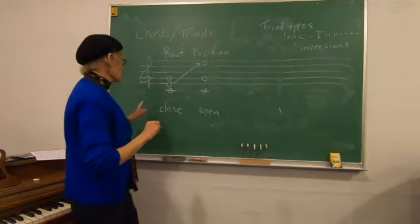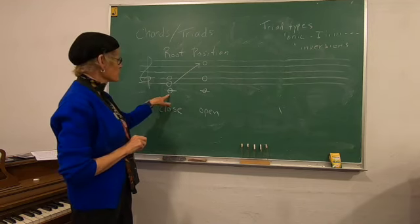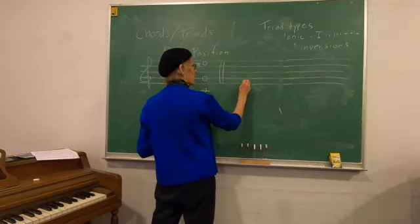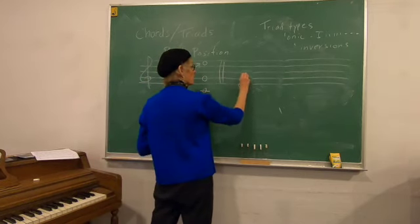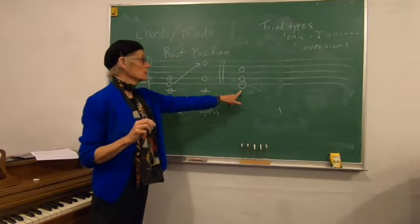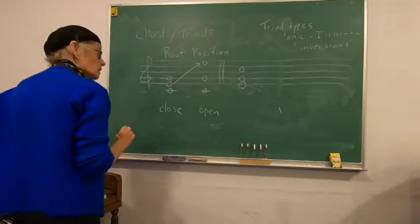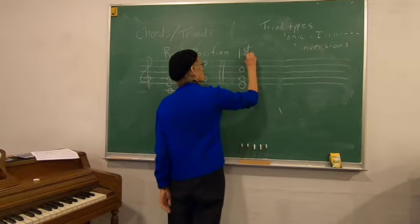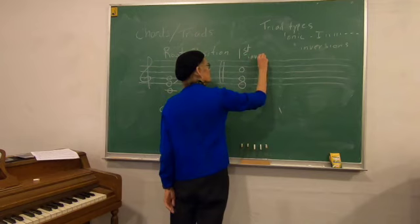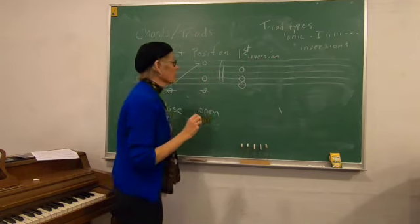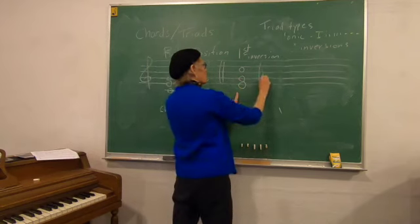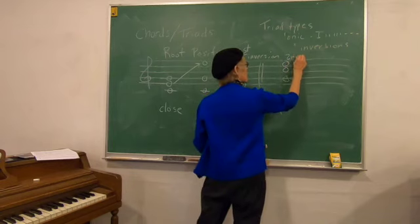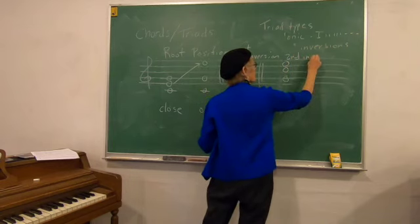Root position has the root, that is, the first note of the triad, on the bottom. If I play the E on the bottom, and play it in this position, with the E and the G and the C on the top, this is called first inversion. And there's one more possible position with a G on the bottom, and that's called second inversion.